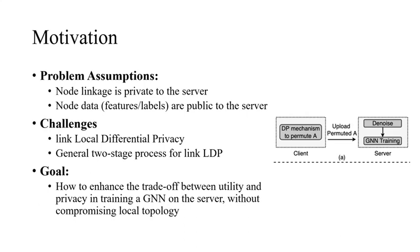Although some work has existed on this topic, we observe that existing work can be unified into two processes. First, the client nodes add noise to their neighboring information and transmit it, along with their original feature data, to the server. Second, the server denoises the perturbed graph and then trains the private GNN model. While many studies have focused on protecting topology, achieving a balanced trade-off between privacy and utility remains challenging.